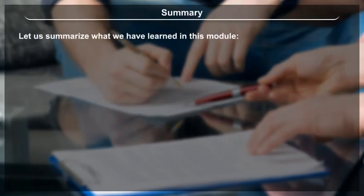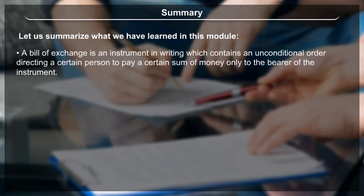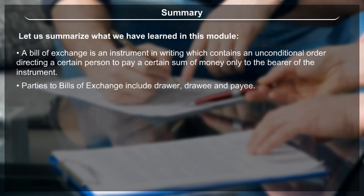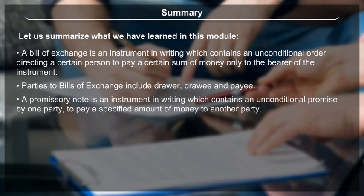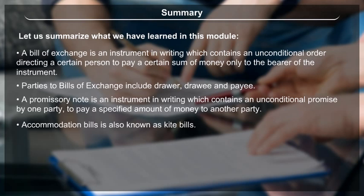Summary: A bill of exchange is an instrument in writing which contains an unconditional order directing a certain person to pay a certain sum of money only to the bearer of the instrument. Parties to a bill of exchange include the drawer, drawee, and payee. A promissory note is an instrument in writing containing an unconditional promise by one party to pay a specified amount of money to another party. Accommodation bills are also known as kite bills. Bills receivable and bills payable are accounted for accordingly.